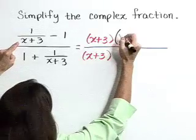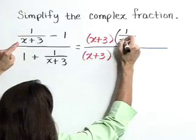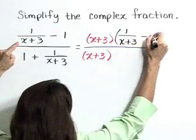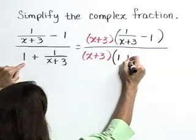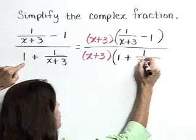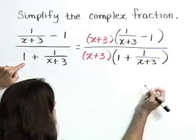x plus 3 times 1 over x plus 3 minus 1 in the numerator, and x plus 3 times 1 plus 1 over x plus 3 in the denominator.